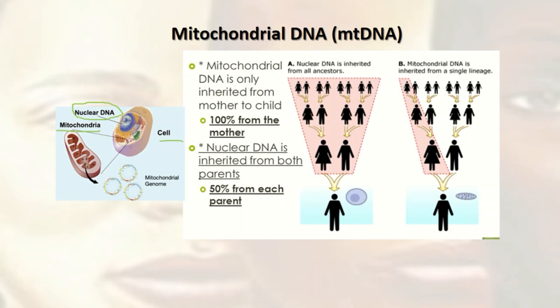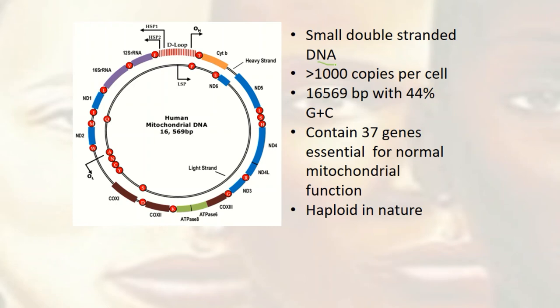Mitochondrial DNA is usually inherited from mother to child 100%, while nuclear DNA is inherited from both parents — 50% from the mother and 50% from the father. It is a small double-stranded DNA with over 1,000 copies per cell, usually 16,569 base pairs with 44% GC content — that is guanosine and cytosine. It usually has a light strand and a heavy strand.